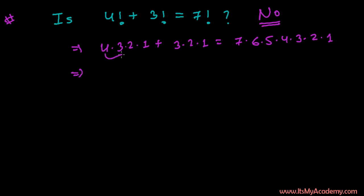So 4 times 3 is 12. 12 times 2 is 24. It's 24. 3 times 2 is 6.